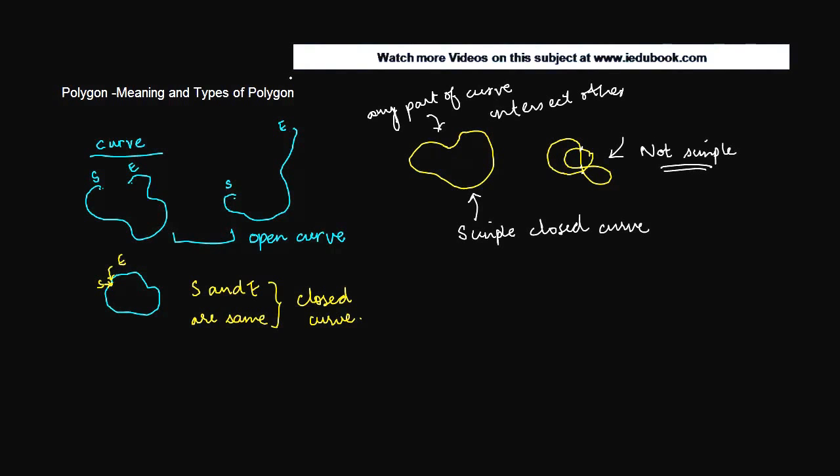And now let us come back to what is the meaning of polygon. You must be wondering why am I explaining you all these curves when what we are dealing with is a polygon. A polygon is basically a simple closed curve.